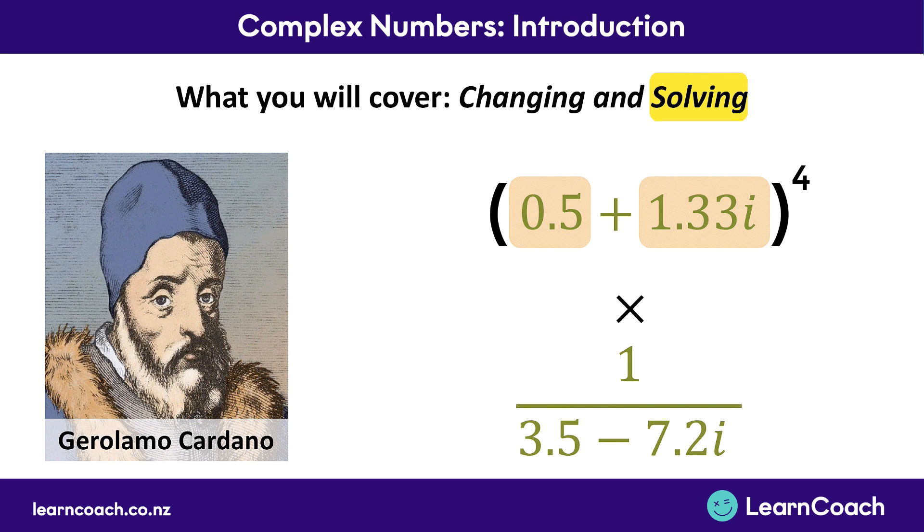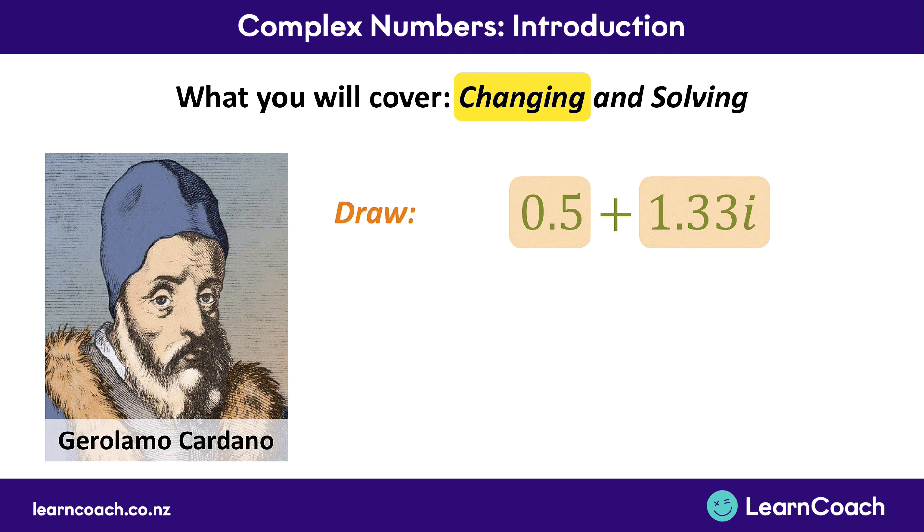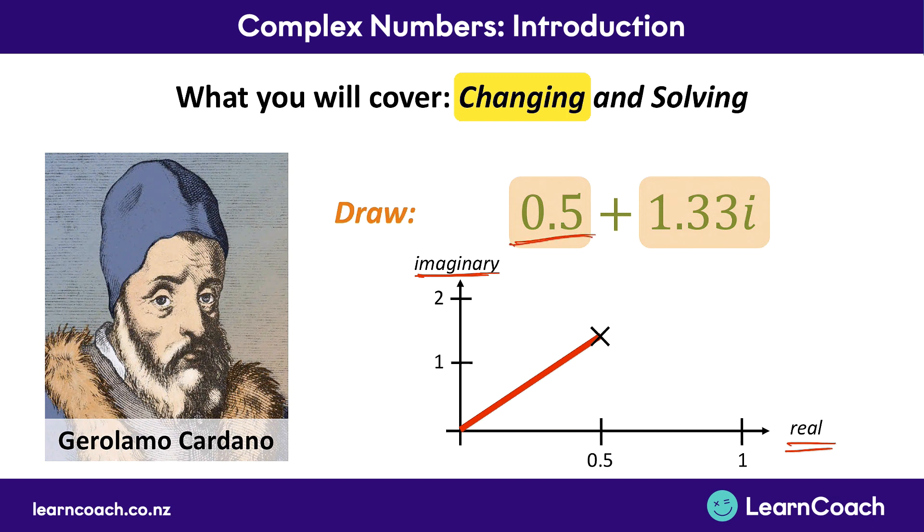Now the other thing you might come across is just changing complex numbers around. Now when you change something around, you could simplify this equation rather than having to find a whole solution of what it actually equals. Or alternatively, you might have to draw a complex number on a diagram. And what that almost always entails is you've got two axes just like a graph. You've got a real axis and an imaginary axis. So we go across and plot the real number of 0.5 here, and we plot the imaginary number here of 1.33. So on the imaginary axis we go to 1.33 and we plot those two numbers. This is called an argand diagram. So that's how you might draw a complex number.